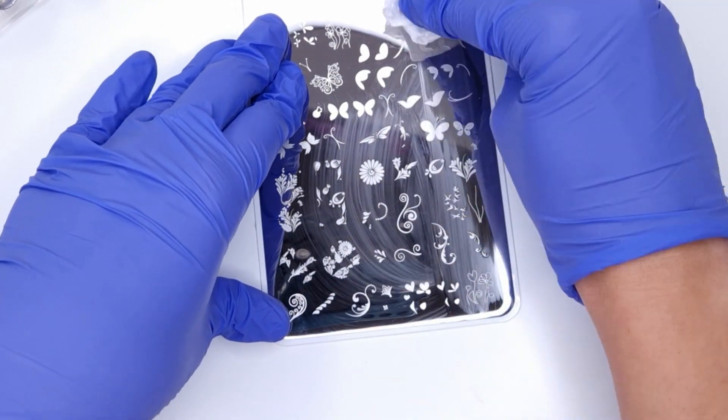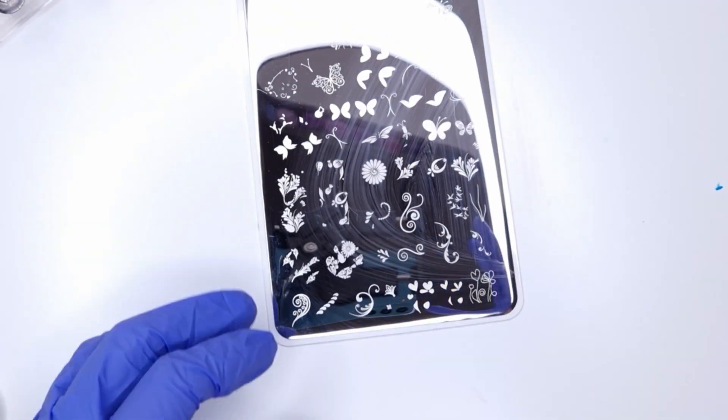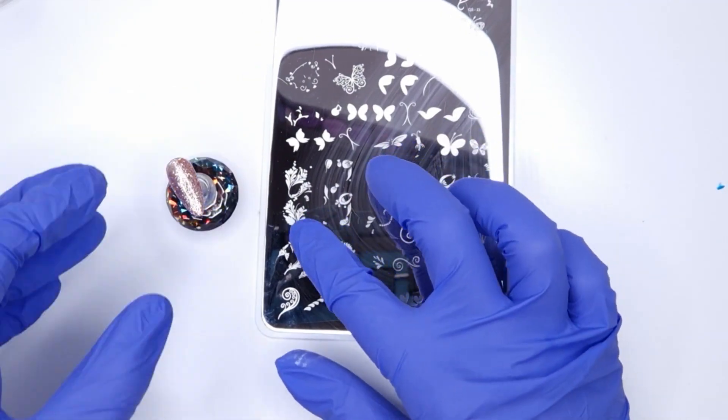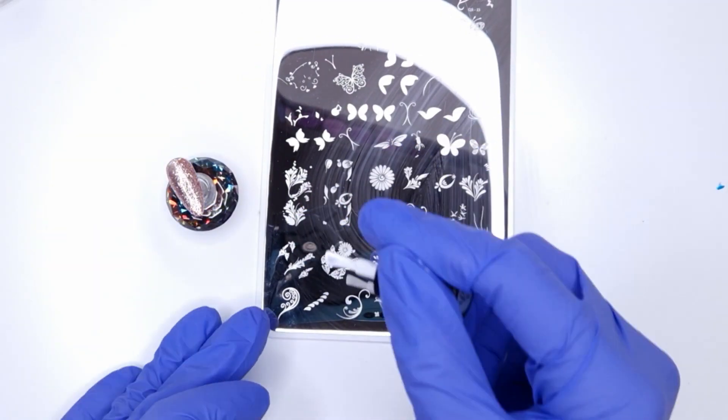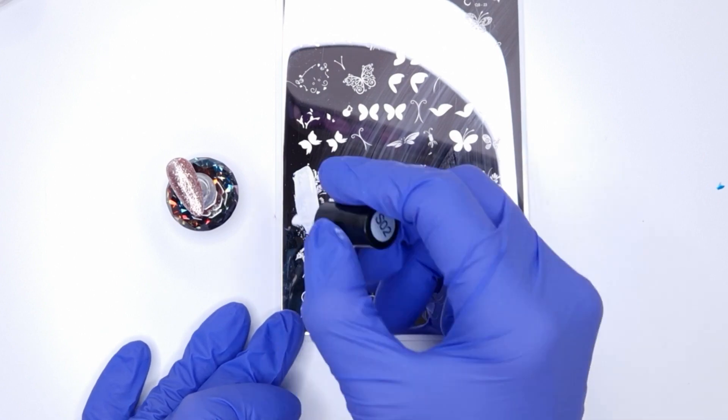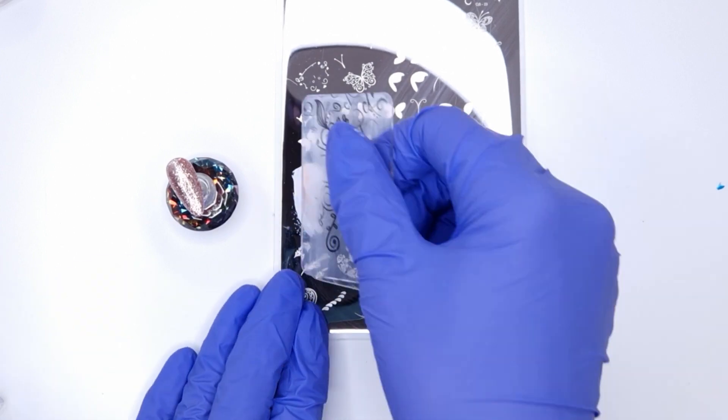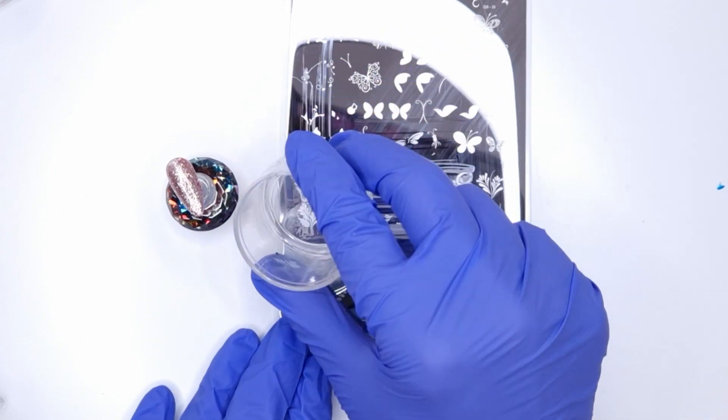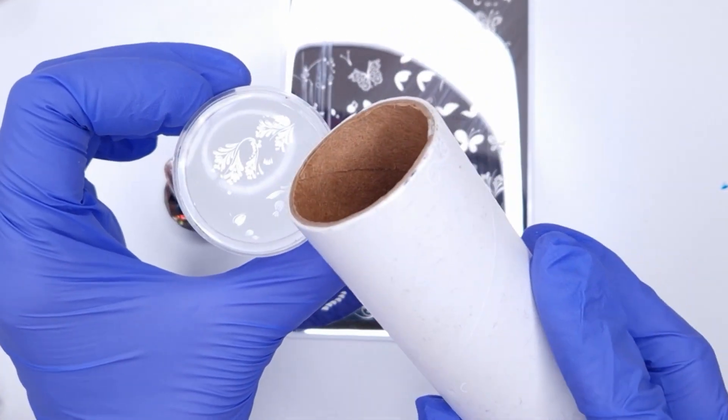Again giving the plate a good clean with some acetone just to make sure we remove all of that stamping polish. Now the next image is a layered one so as you can see you've got two parts. I went for this one because I wanted a bit more of a full cover stamp over the full glitter nail. So we're popping down the first layer of the image which is the main bulk of it so I decided to do that in white.